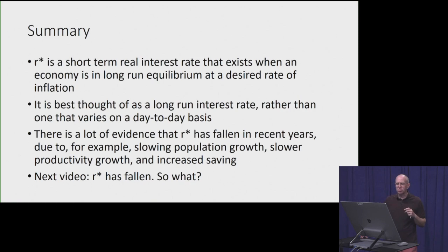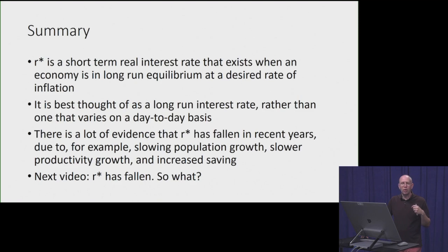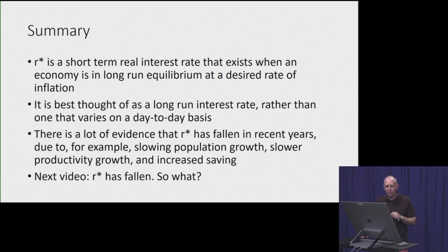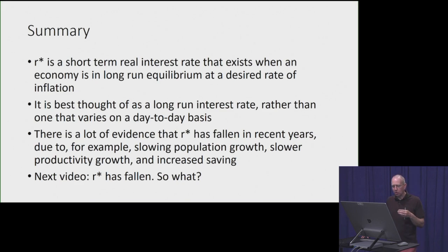In summary, r-star is a short-term real interest rate that exists when an economy is at full employment equilibrium at a desired rate of inflation. It's best thought of as a long-run rate rather than one that varies on a day-to-day short-run basis, as happens in bond markets. There is a great deal of evidence that r-star has fallen a lot in recent years for a variety of reasons, including population growth declines, slower productivity growth, and increased saving. The next video will look at those reasons in more detail and discuss the implications — why does it matter? Thank you very much.